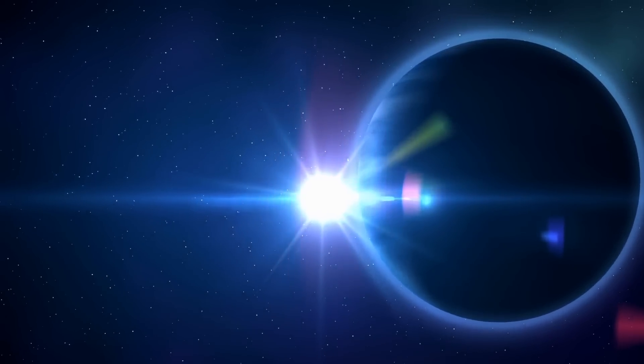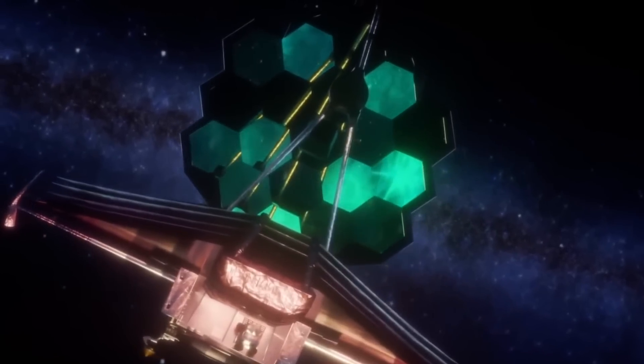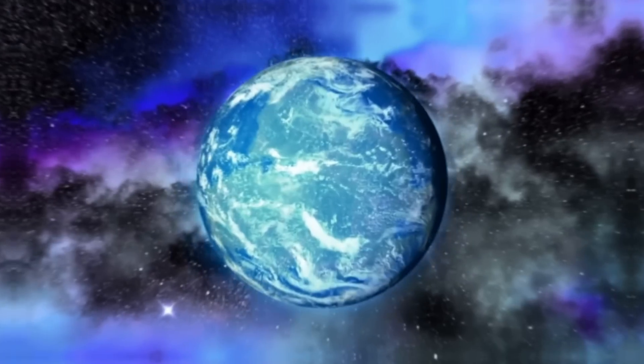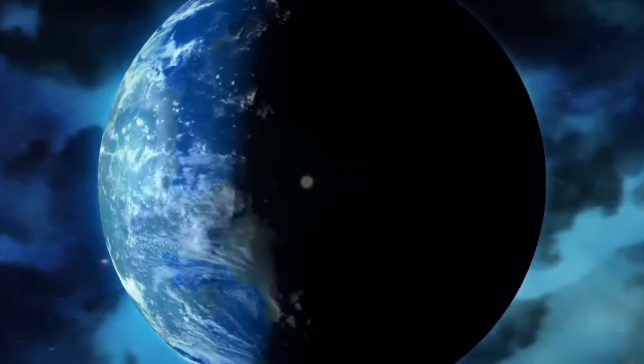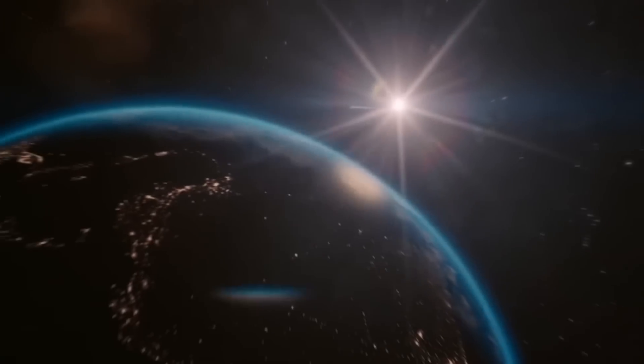Proxima b will be one of the first exoplanets that JWST will target in its search for habitable planets. However, it must be similar to Earth for life to exist elsewhere. In order to explore the remarkable properties of Proxima b, compare it to the Earth.